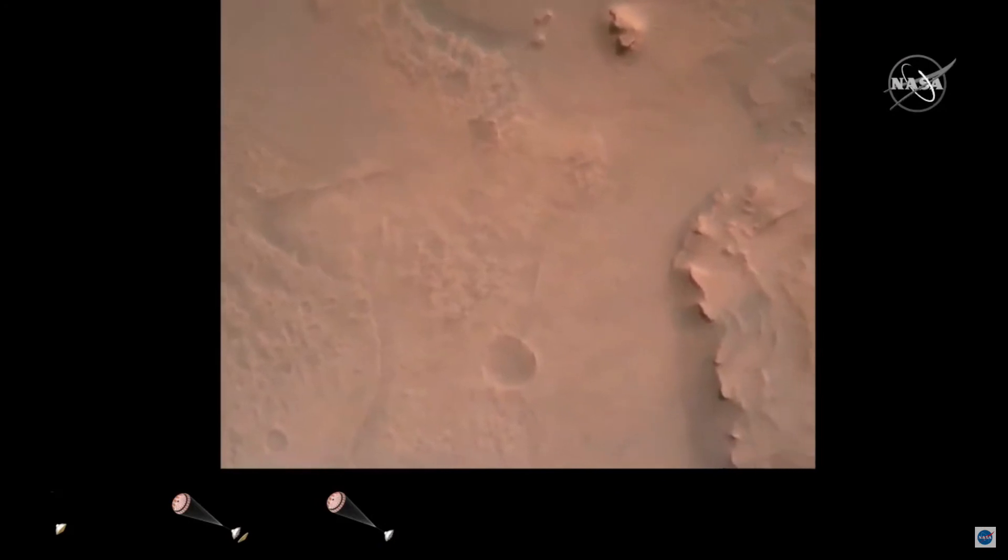Perseverance is continuing to descend on the parachute. We are coming upon the initialization of terrain relative navigation and, subsequently, the priming of the landing engines. Our current velocity is about 90 meters per second at an altitude of 4.2 kilometers. We have confirmation that the lander vision system has produced a valid solution as part of terrain relative navigation.